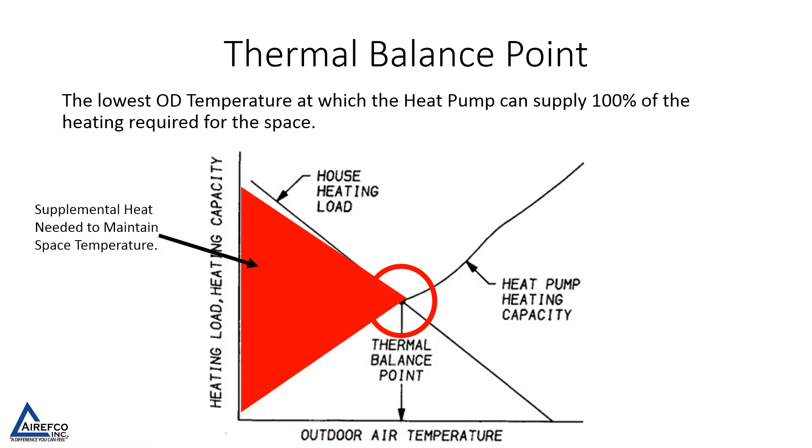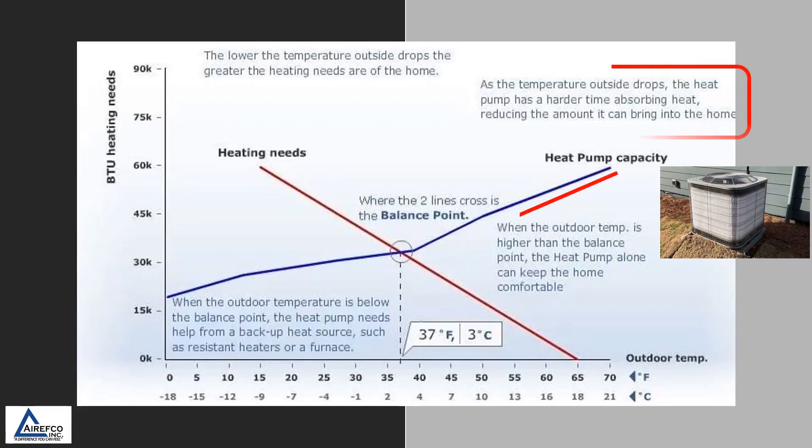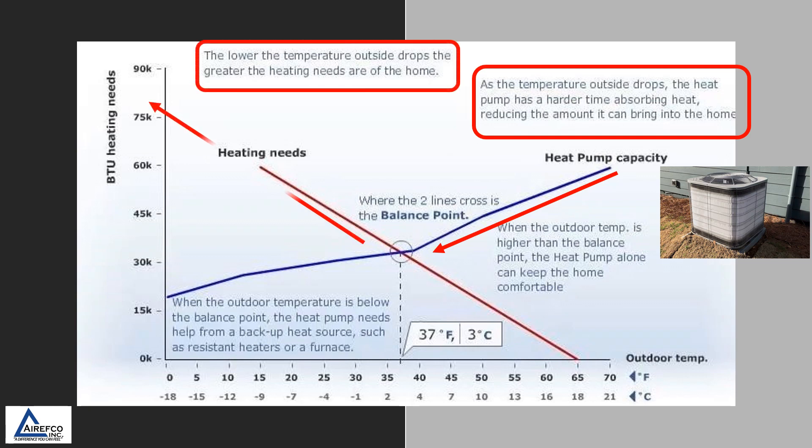Past this point, supplemental heat would be needed to maintain the space temperature. As the temperature outside drops, the heat pump has a harder time absorbing heat, reducing the amount it can bring into the home. The lower the temperature outside drops, the greater the heating needs are of the home.